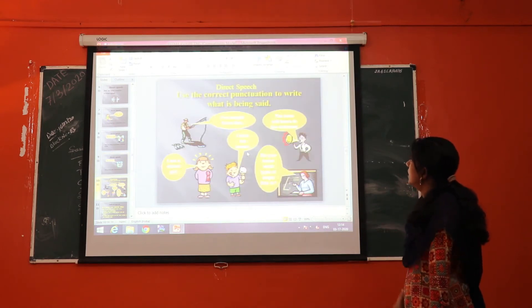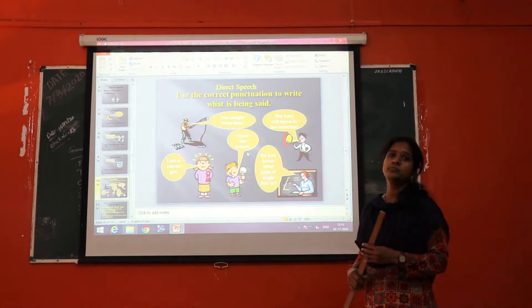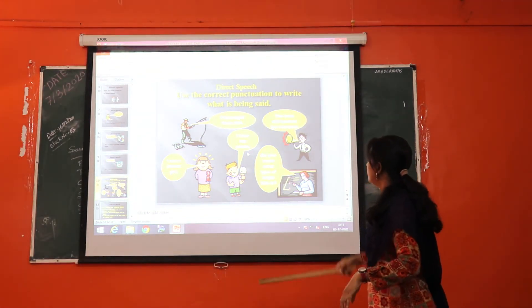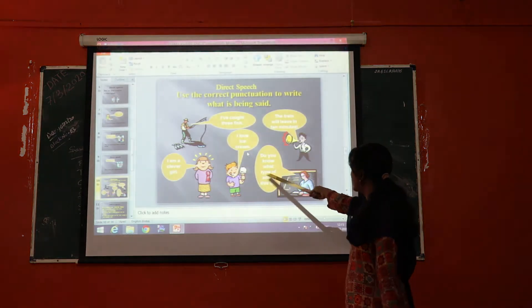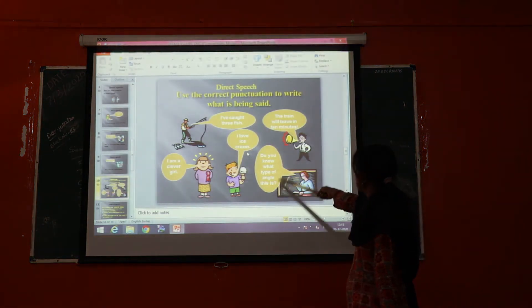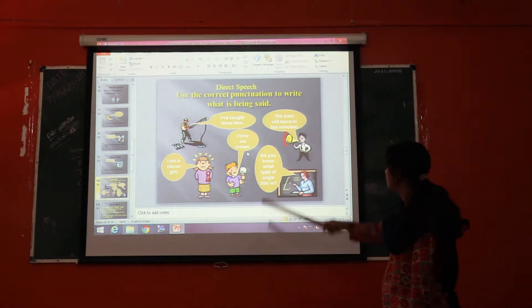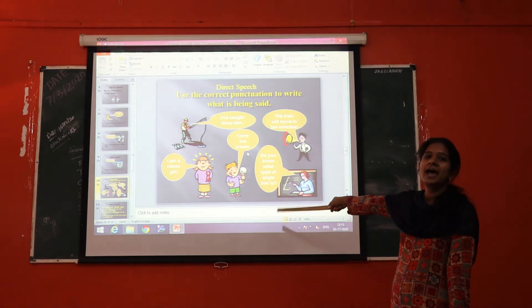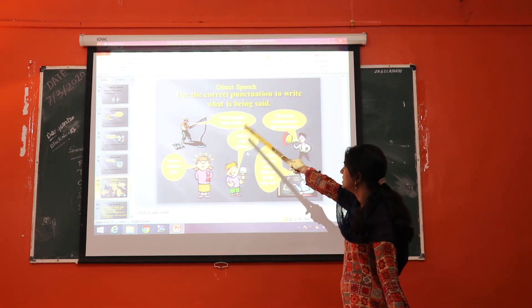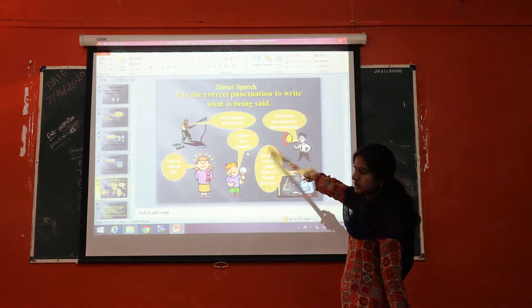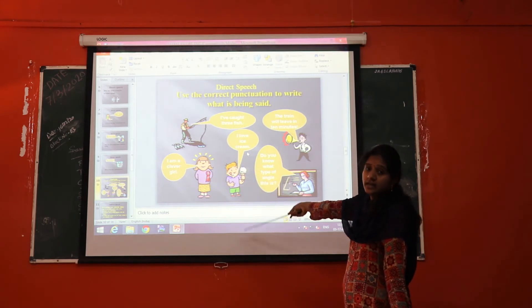Here we can see how conjugation works in direct speech. When we use direct speech there is a conjugation structure we have to make. For example: "I have got three speeches." "I am a clever girl." "I love a speech." "Do you know what type of anger this is?" "The train will leave in 10 minutes." Each example has different punctuation marks — a question mark, a full stop — and each must be written inside double inverted commas.